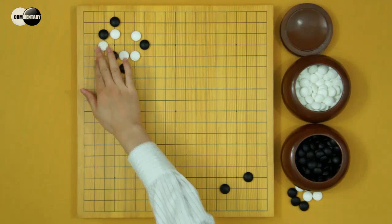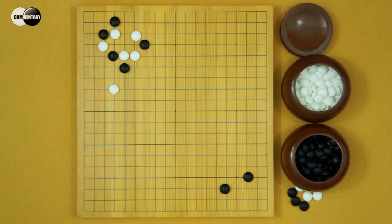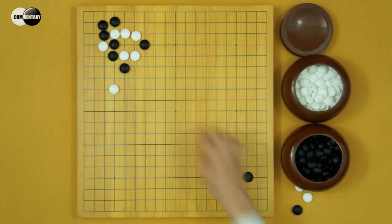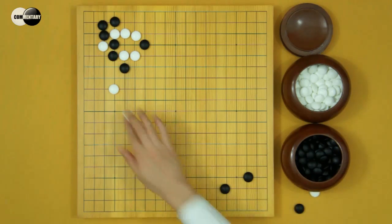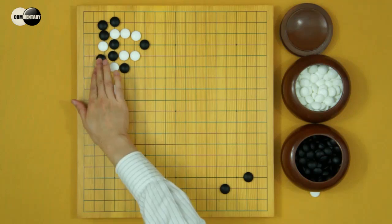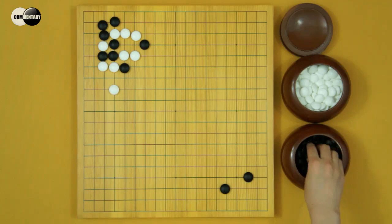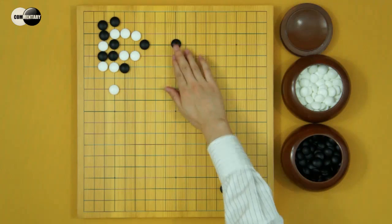If White hane here, counter-attacks. Black atari. White connects. Black connects. White cuts. Black atari. White blocks. Black extends.